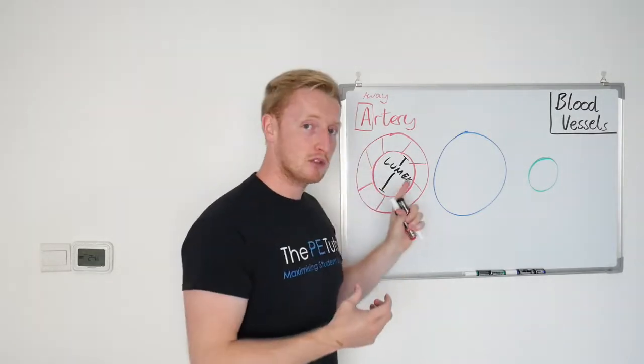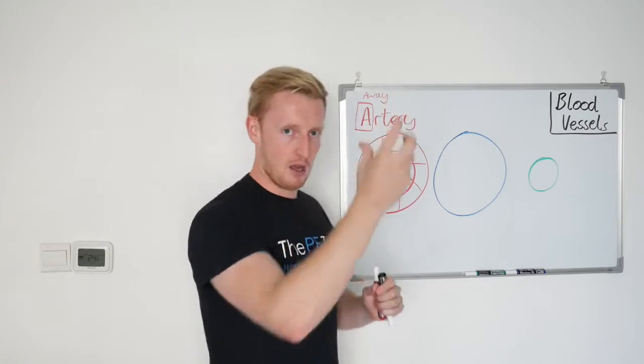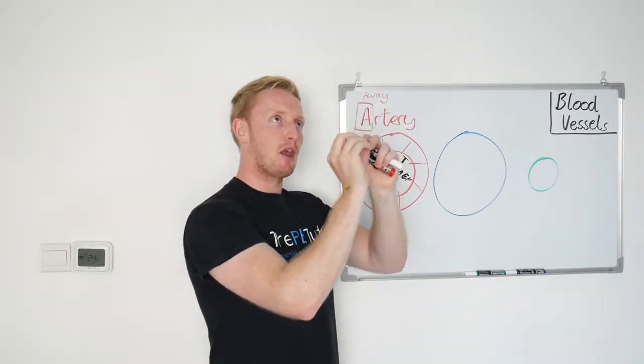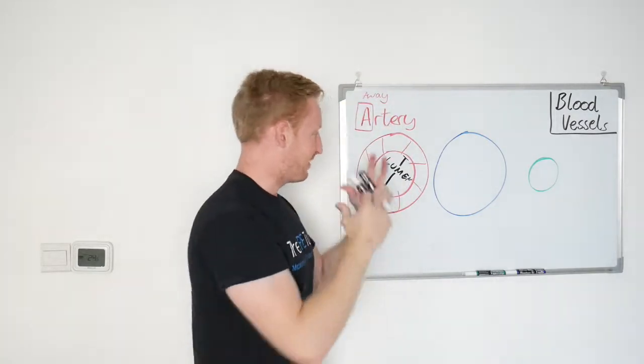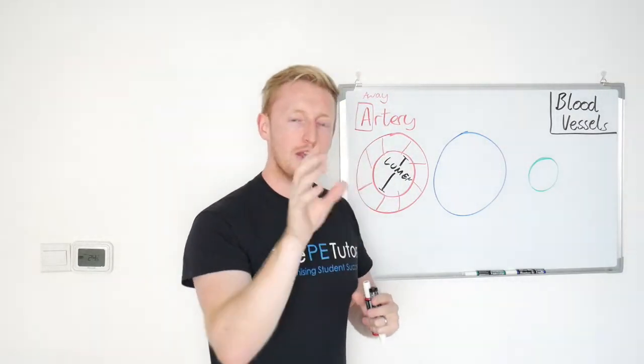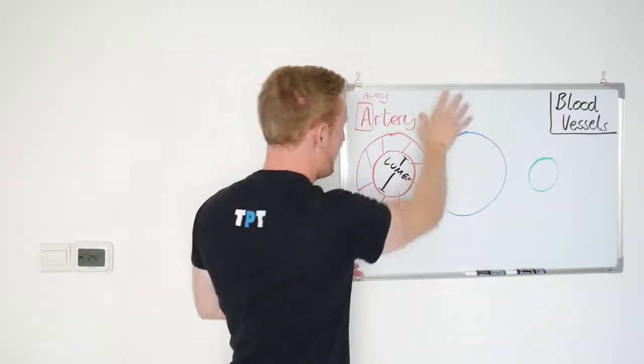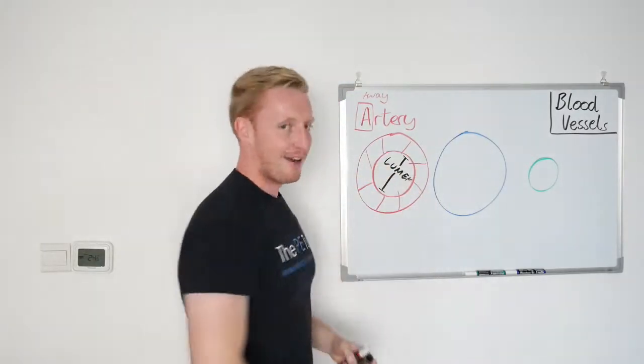It's normally carrying blood that's just been oxygenated. An exception to that would be the pulmonary artery, which pumps deoxygenated blood from the heart up to the lungs. That's deoxygenated, but that's one of the, if not the only one that you need to know of. So arteries carry blood away from the heart, thick walls, narrow lumen.